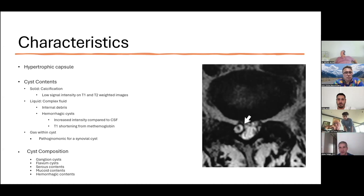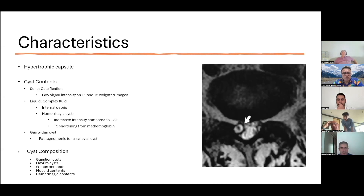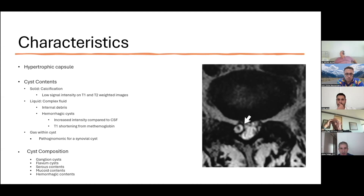T1 imaging is mainly going to be hyperintense for fat, whereas T2 is going to be mainly hyperintense for edema or fluid. What we're seeing is a hypertrophic capsule indicated by the dark outer rim. Solid things show up with low signal intensity, while liquid things show up as hypointense on T1. If you see gas within the cyst, it can be pathognomonic for a synovial cyst.